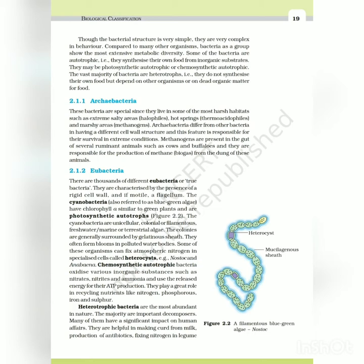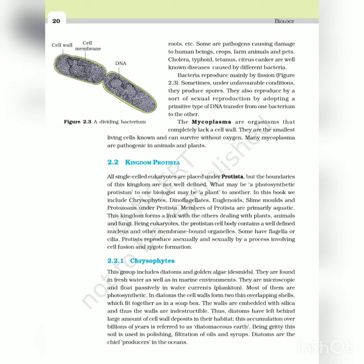Chemosynthetic autotrophic bacteria oxidize various inorganic substances such as nitrates, nitrites and ammonia, and use the released energy for their ATP production. They play a great role in recycling nutrients like nitrogen, phosphorus, iron and sulfur. Heterotrophic bacteria are the most abundant in nature. The majority are important decomposers. Many of them have a significant impact on human affairs. They are helpful in making curd from milk, production of antibiotics, fixing nitrogen in legume roots, etc. Some are pathogens causing damage to human beings, crops, farm animals and pets. Cholera, typhoid, tetanus, and citrus canker are well-known diseases caused by different bacteria.